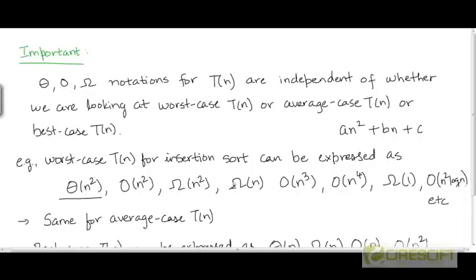Recall that any function in Ω(n) needs to have either the same or a larger order of growth than n. Because a quadratic function has a higher order of growth than n, any quadratic expression can be written as Ω(n). For this reason, we could have represented the worst case running time of insertion sort as Ω(n) as well.